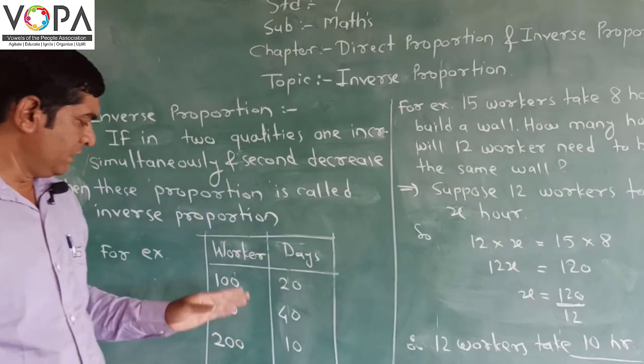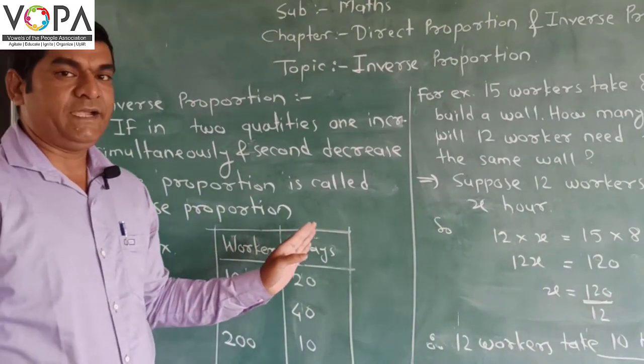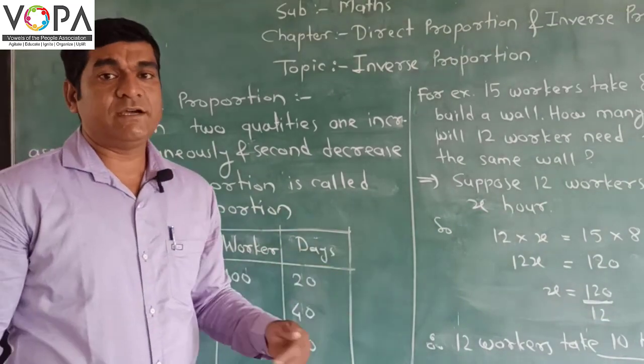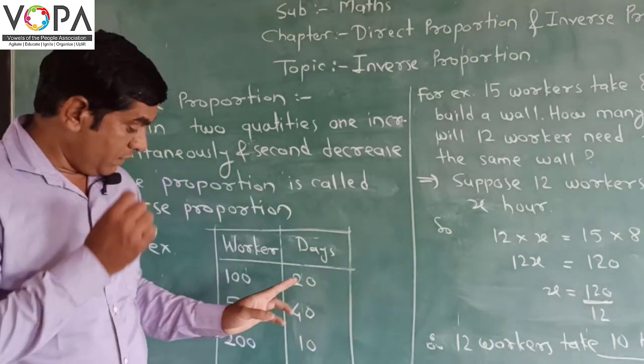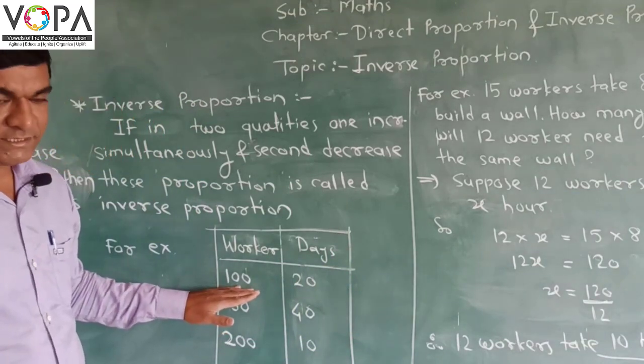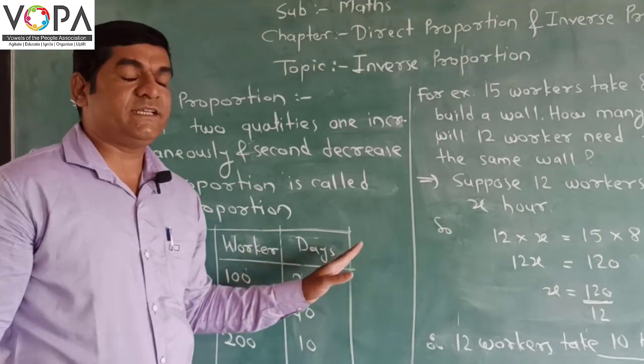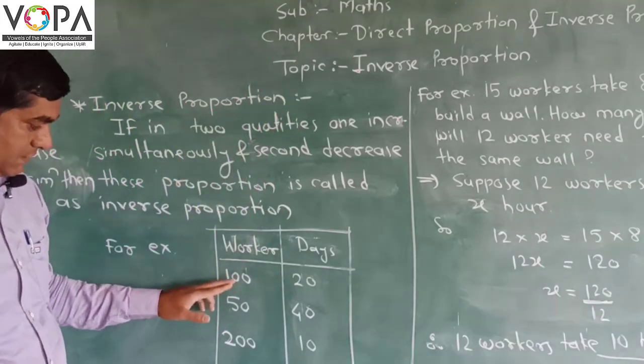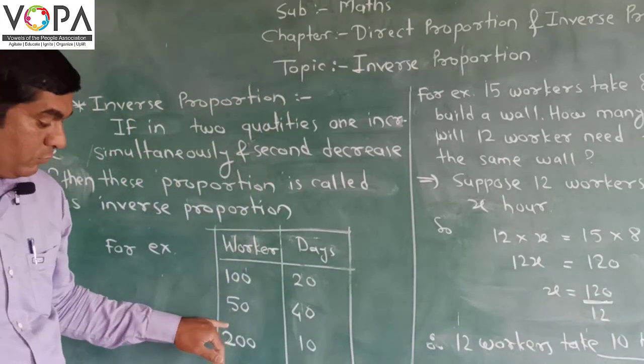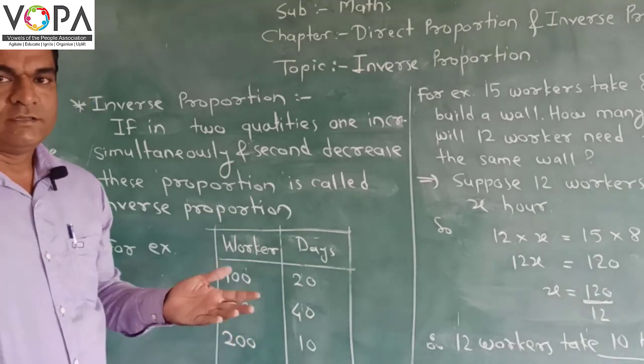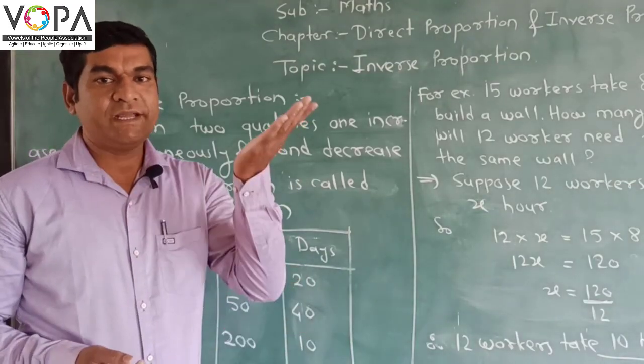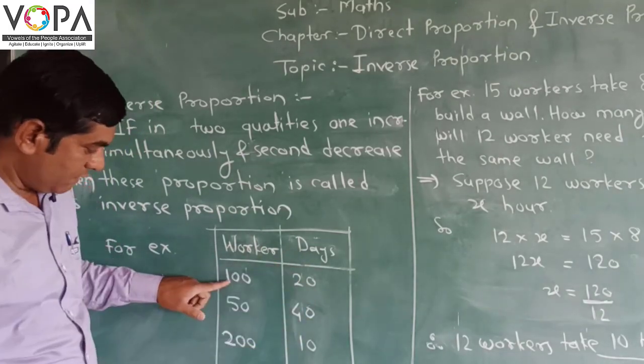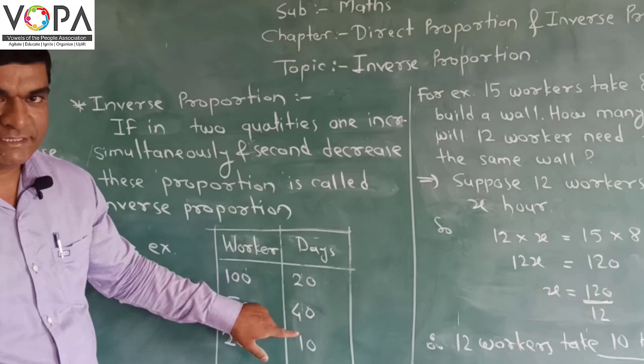Let us see by example. Take the example of workers and days. If we decrease the number of workers - 100 workers decreased to 50 - then we require more days. How many days? 40. In this case, number of workers decreased, number of days increased.